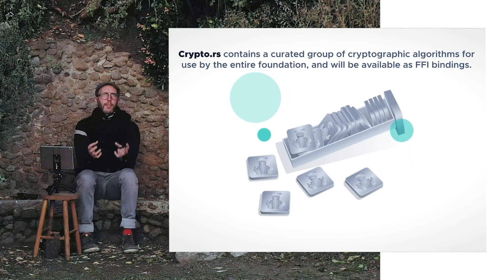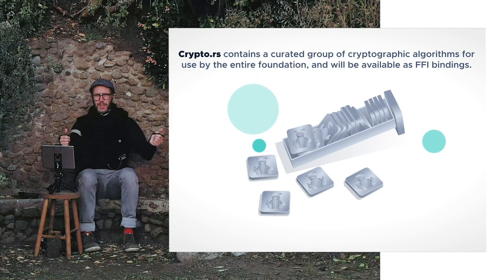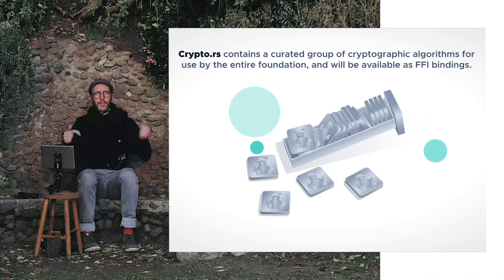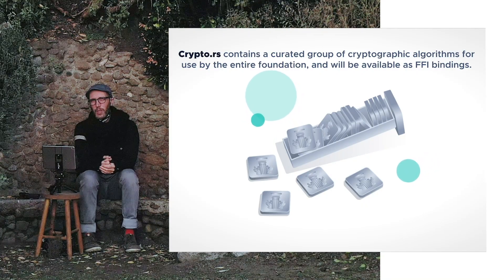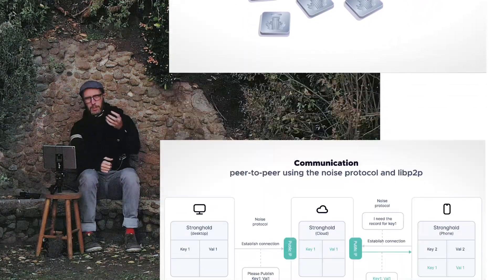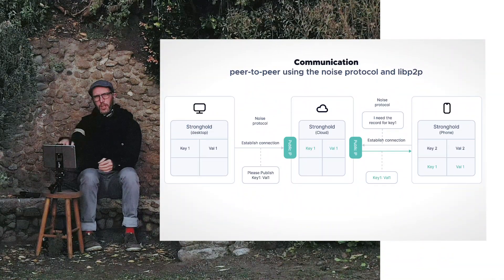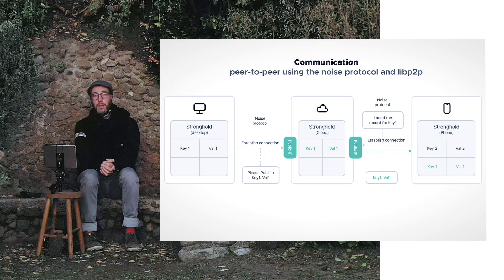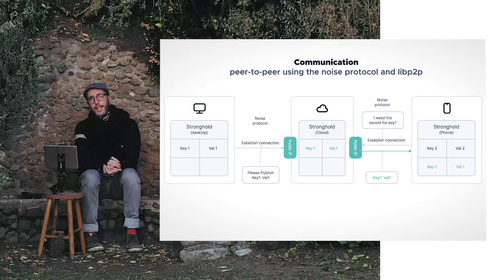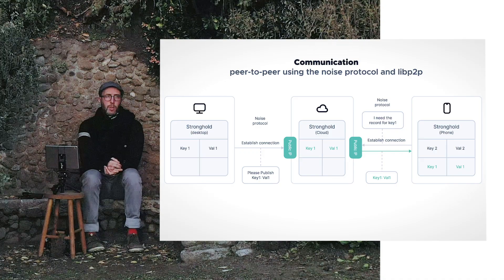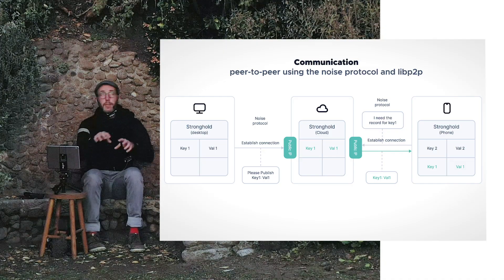This is all great inside of your operating system, but sometimes you want to have your phone talk to your desktop and there's not really that many great ways to do that these days. So we've created a system called the communication layer that allows Strongholds to talk to each other using the noise protocol, which is a type of ephemeral key encryption, and libp2p, which is the cutting edge of peer-to-peer communications.